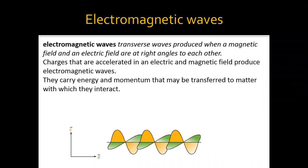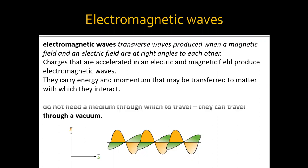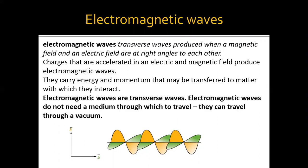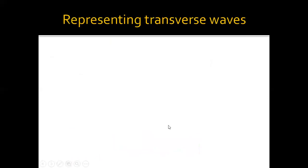Electromagnetic waves carry energy and momentum, which means they can move through a vacuum — they do not need any medium to travel through. Unlike mechanical waves, they do not need any material. They can transfer energy from one place to another by interaction. To summarize: electromagnetic waves do not need a medium and can travel through a vacuum.